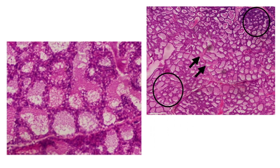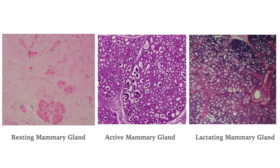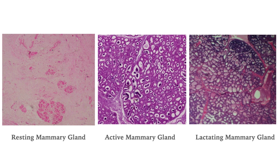This is a higher magnification of the alveoli lined by cuboidal secretory cells. Milk is identified as the eosinophilic material in the lumen of the alveoli. These three histologic specimens show the difference between a resting, pregnant, and lactating mammary gland. From resting to lactating, there is a gradual increase in the branching complexity of the mammary ducts and development of secretory alveoli. Note also that the connective tissue and adipose content decrease from resting to lactating, and more secretions of milk are present in the alveoli of the lactating mammary gland.